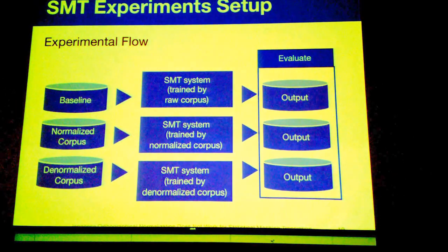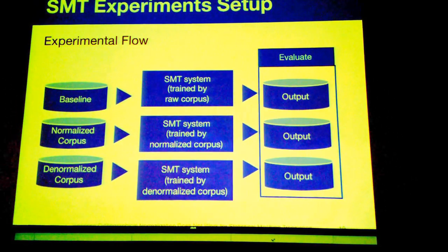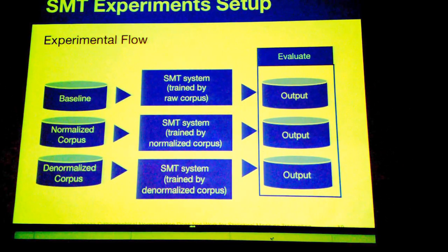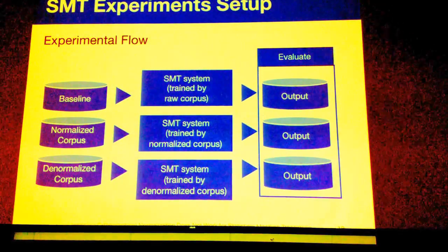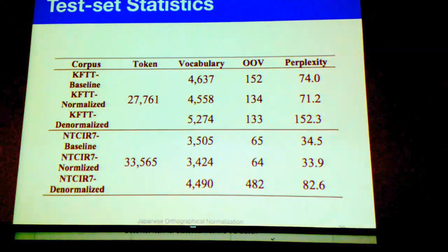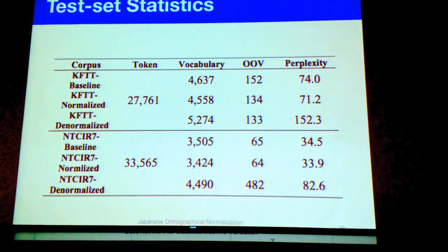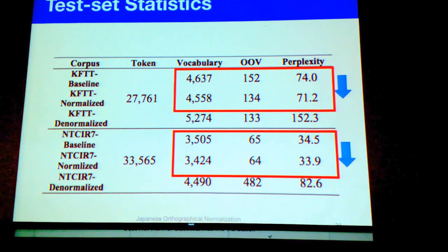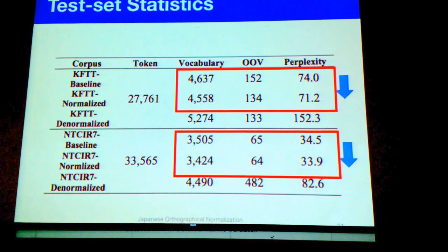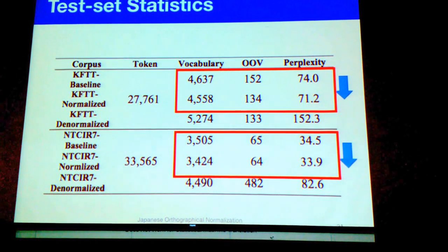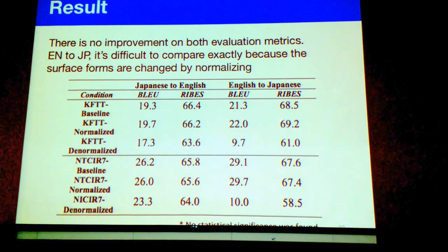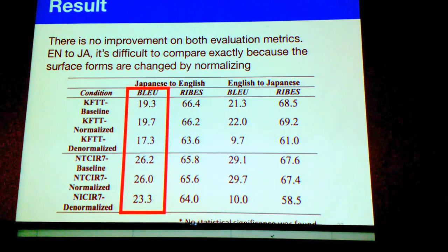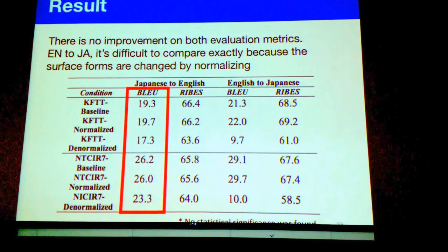This is the experimental flow. We compare three situations: baseline, normalized corpus, and denormalized corpus. Each SMT system is trained on each respective corpus. Before evaluation, this table shows that normalization reduces vocabulary, out-of-vocabulary rate, and perplexity. So we expected normalization to improve SMT quality. However, results show there is no improvement on either evaluation metric — BLEU and RIBES — in Japanese-to-English translation, and no statistical significance.